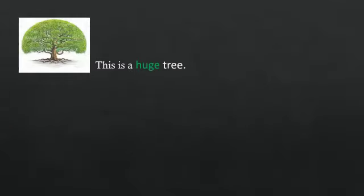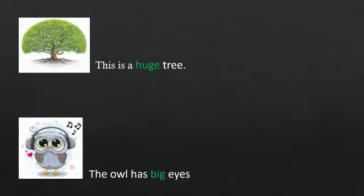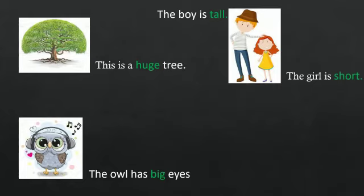This is a huge tree. The owl has big eyes. The boy is tall. The girl is short. Here, huge, big, tall, short are the sizes that describe the naming words and are also called adjectives.